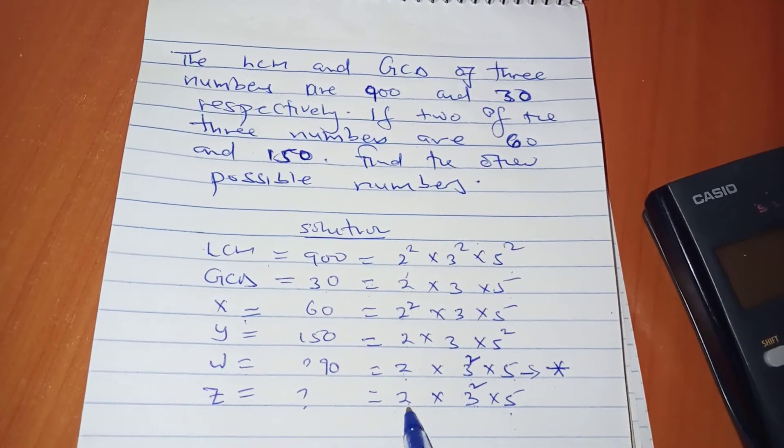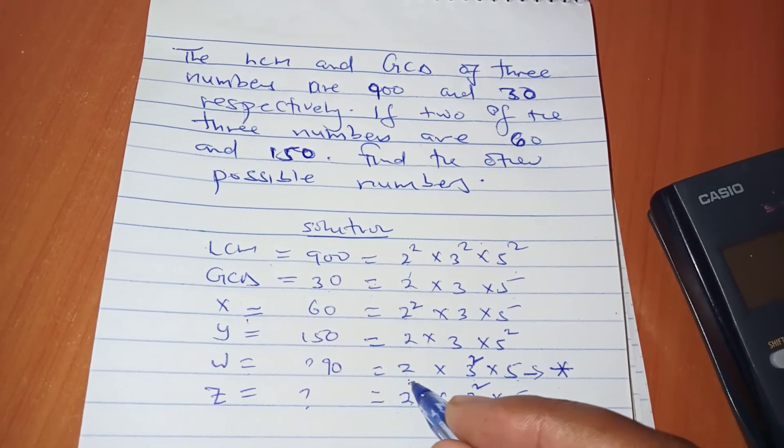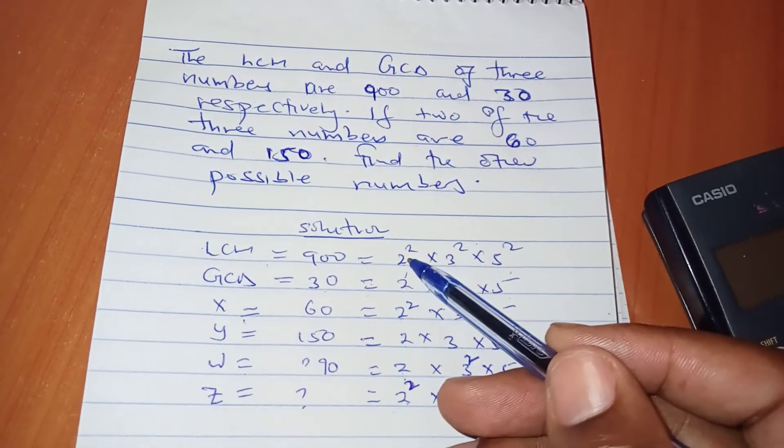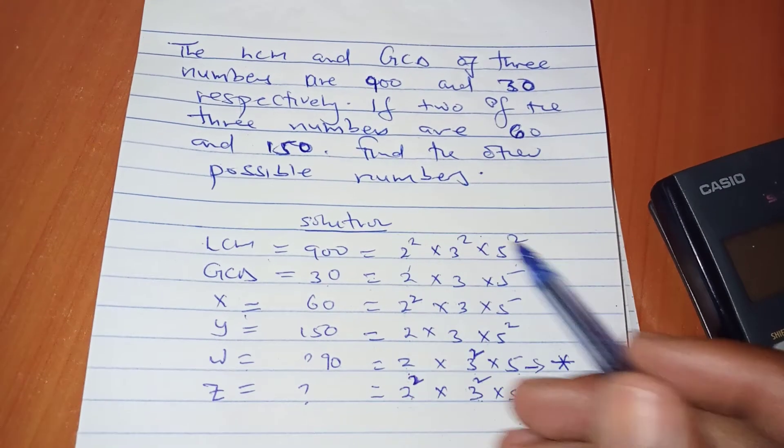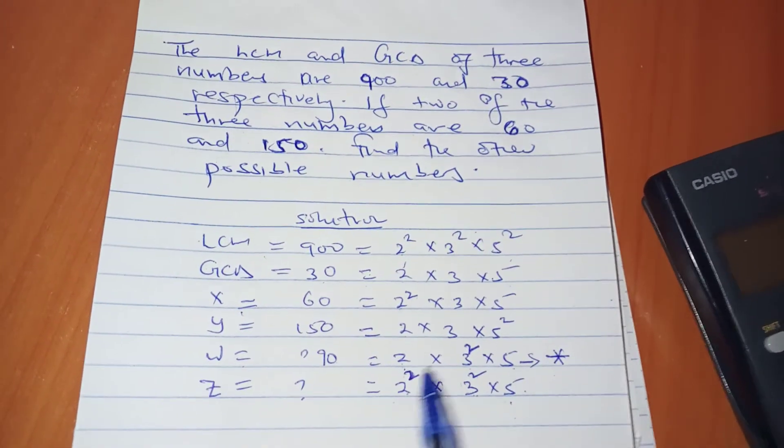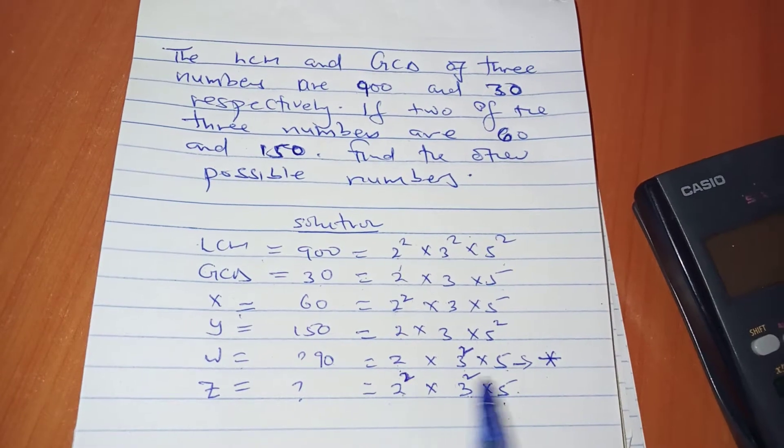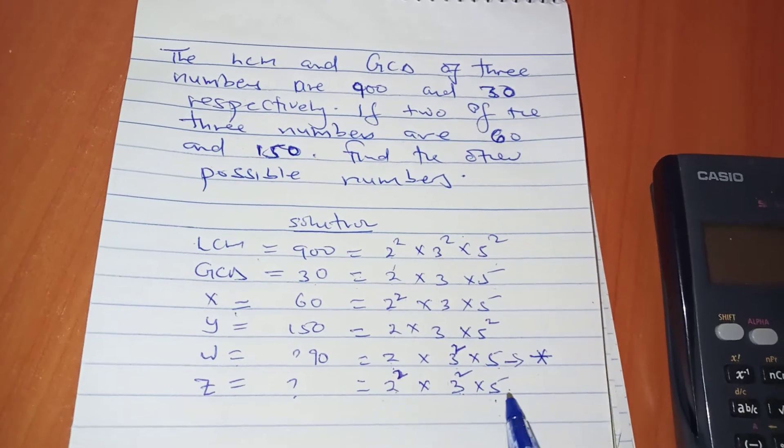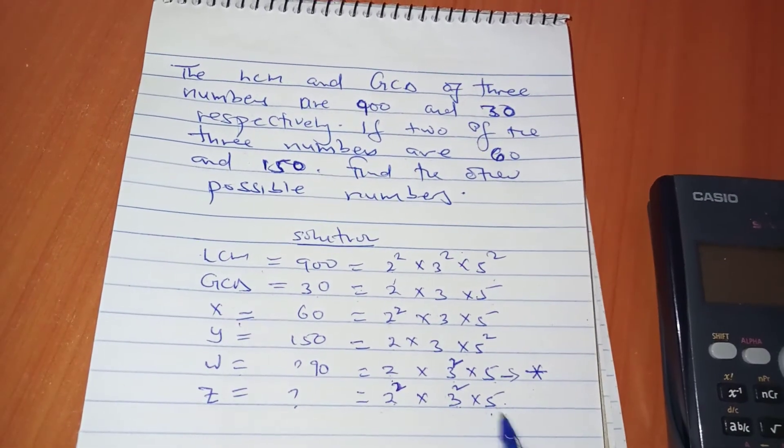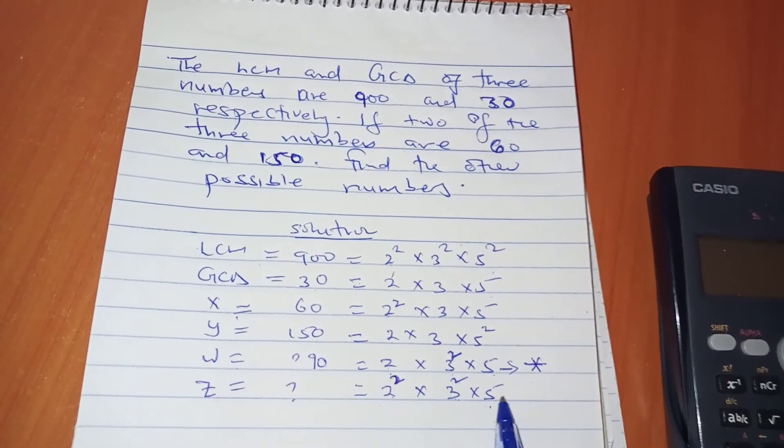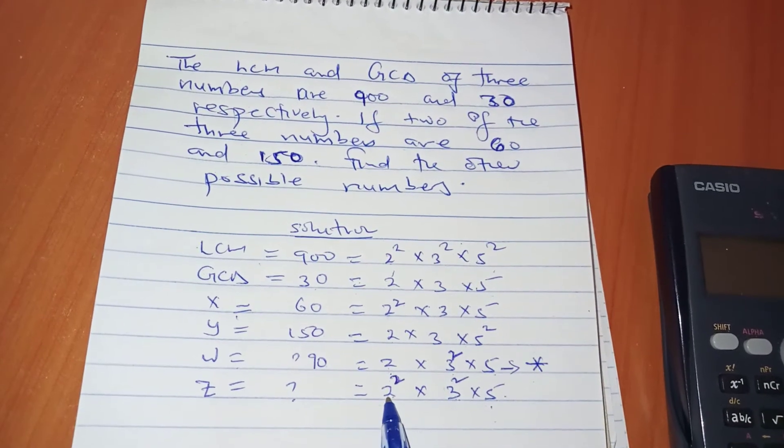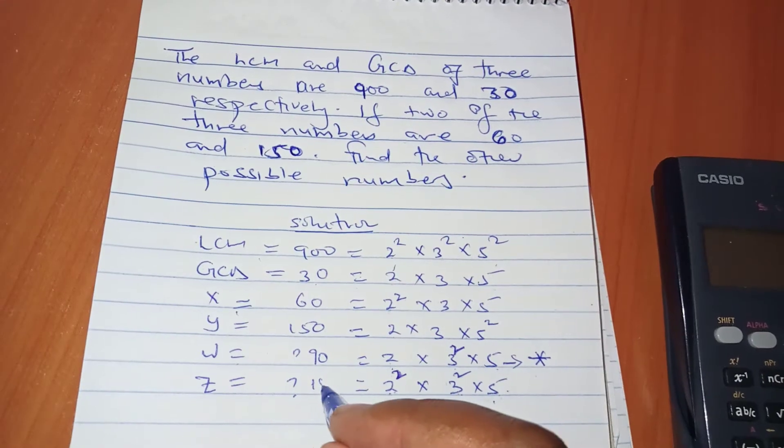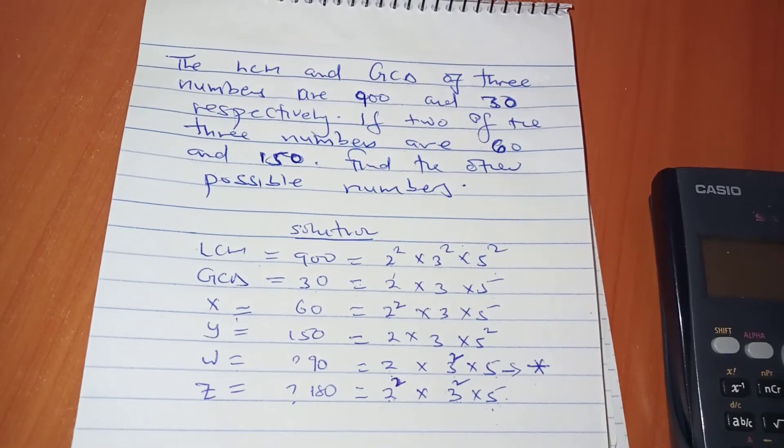If you don't want 90, maybe you want to put 2² here. Be careful, because any power you assign should not exceed the powers in the LCM. So if I put 2² × 3² × 5¹, the new number is 4 × 9 × 5 = 180. So you can have another number, 180.